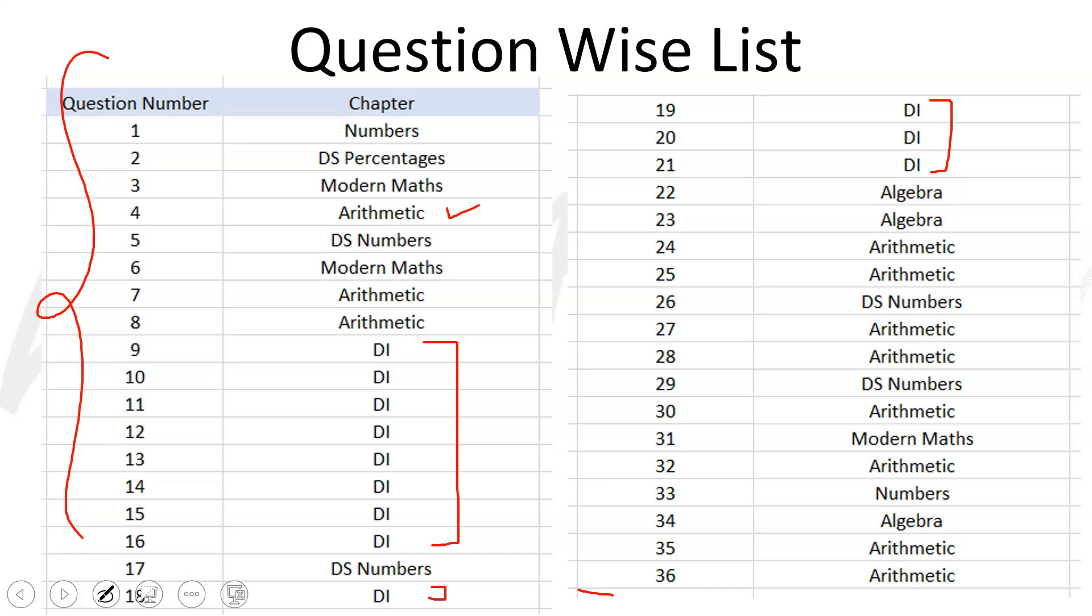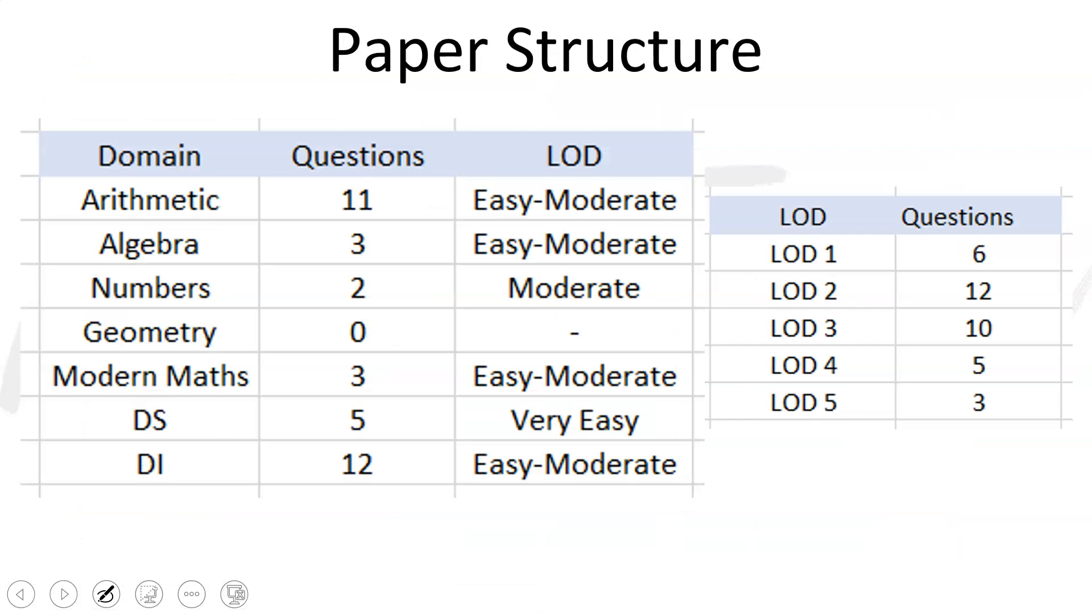So make sure you take that exam, take that mock, and then see this video. Then you'll know the complete analysis. So if you look at the question paper now, I've taken that exam, I've taken that mock, and this is what I got. This was my paper. I had 12 questions on data interpretation, all of them were easy to moderate level. I had 5 questions on data sufficiency.